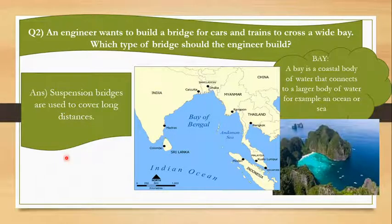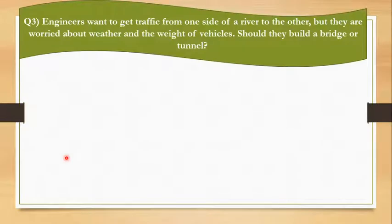The third and last question is: Engineers want to get traffic from one side of a river to the other, but they are worried about weather and the weight of vehicles. Should they build a bridge or tunnel? Here's another scenario. Traffic can be of any kind, heavyweight or lightweight. They're worried about the weather conditions and the weight of vehicles. Should they build a bridge or tunnel?